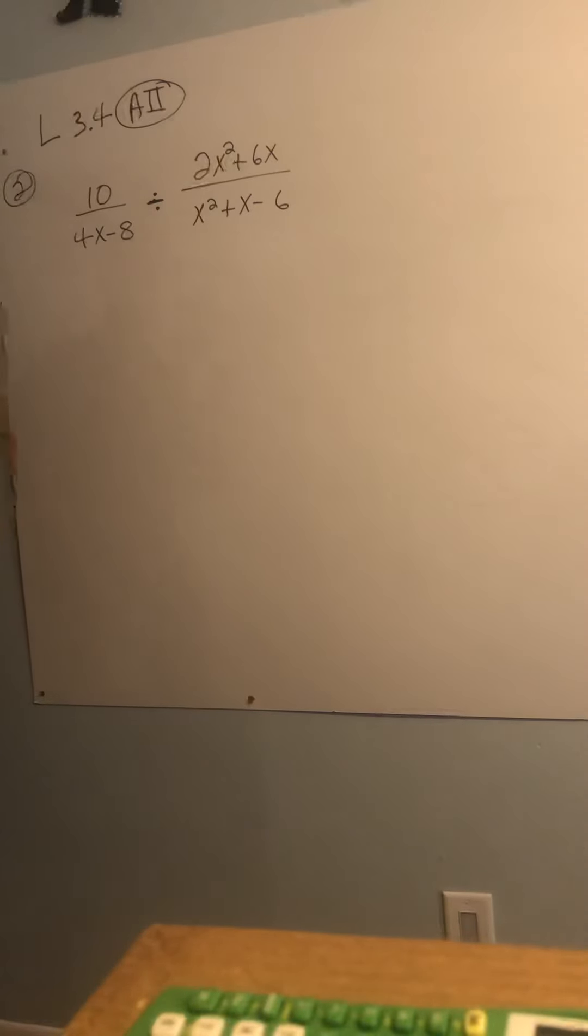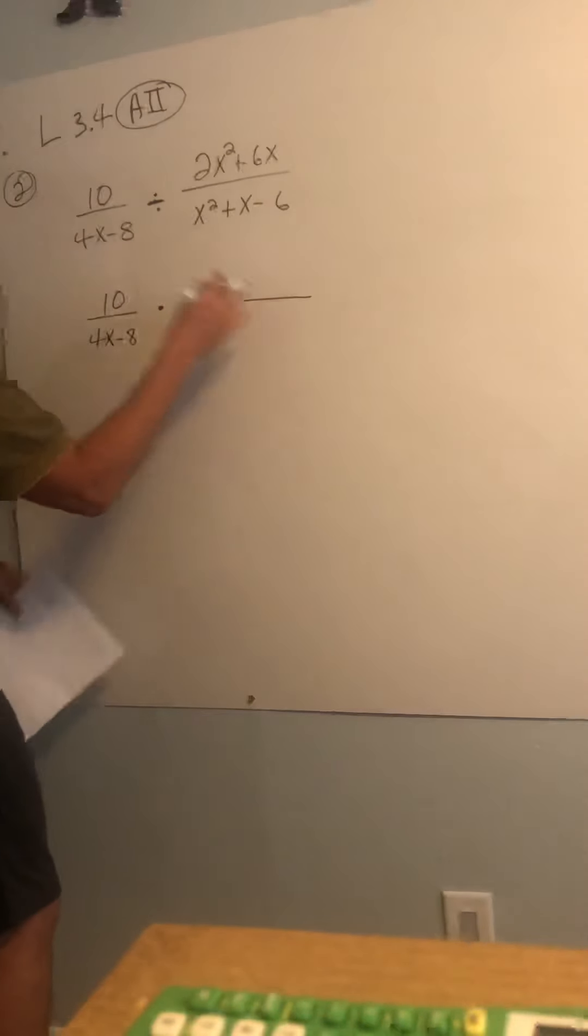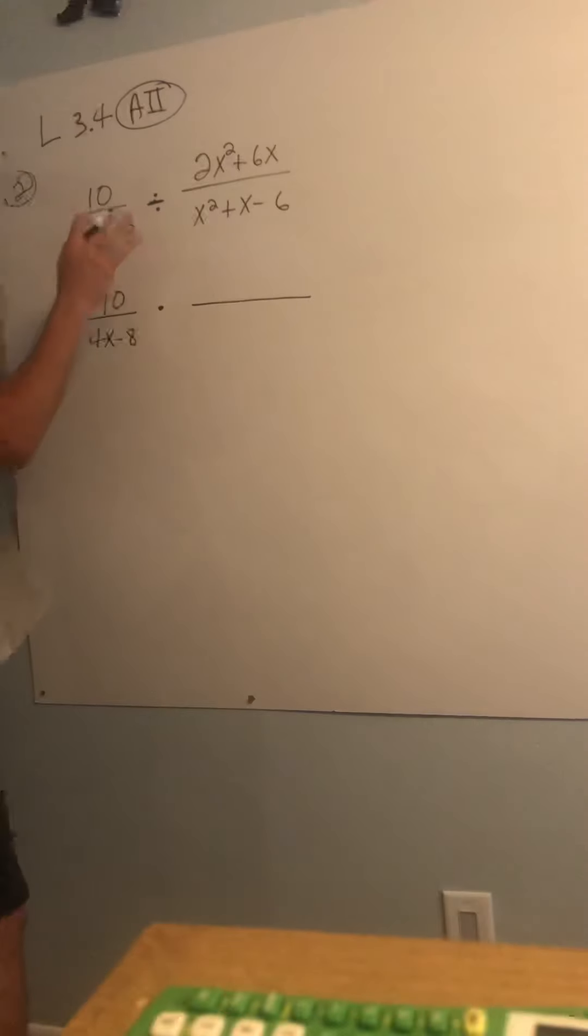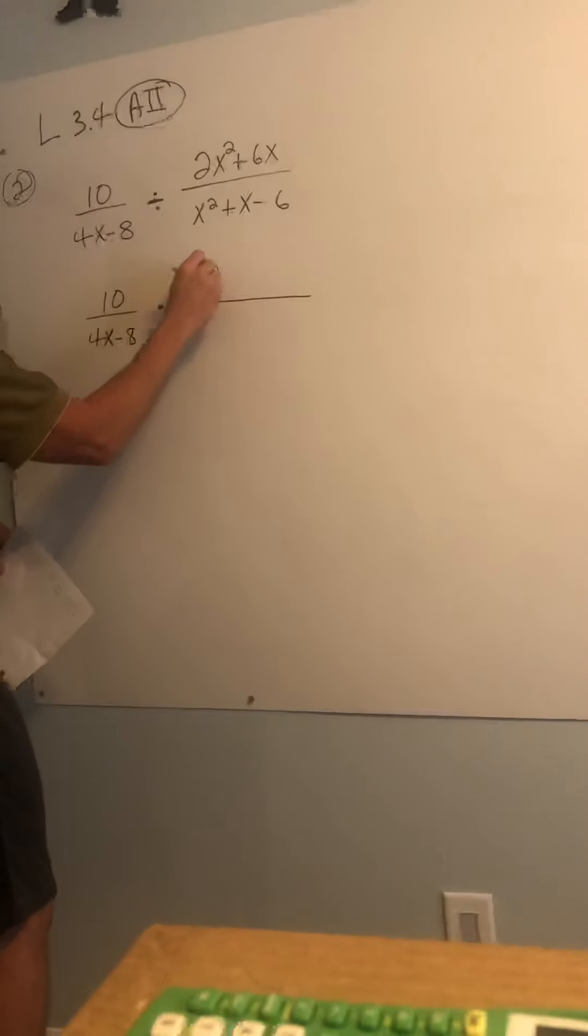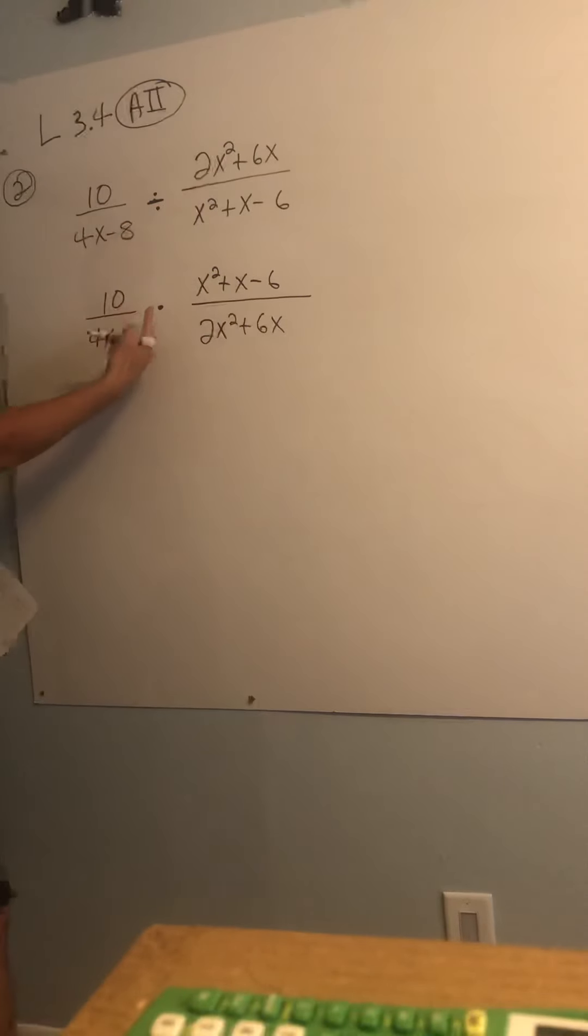Because we're doing division, right? Again, nothing really different except for the initial step. We're going to leave the first fraction alone. Do nothing to the first fraction. I know you want it, but leave it alone. Change this to times, and we're going to do the reciprocal, or flip it, flip it good on the other one. So x squared plus x minus 6 is now in the numerator, and 2x squared plus 6x is in the denominator. Now it was division. We changed it multiplied by reciprocal. Now we get to party. That party is factoring.